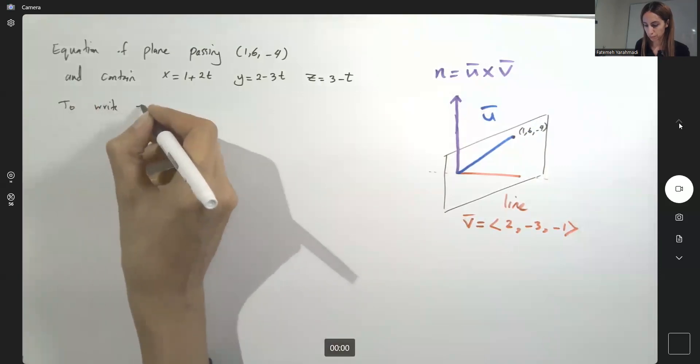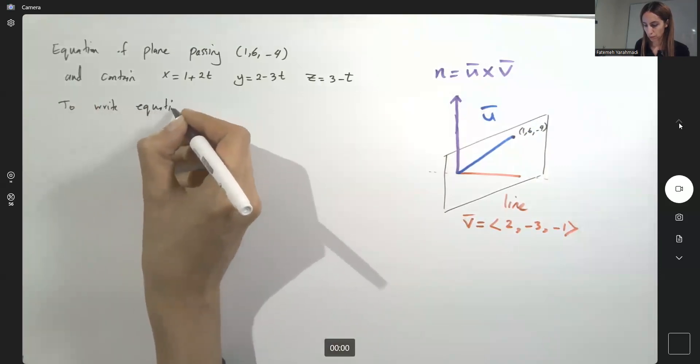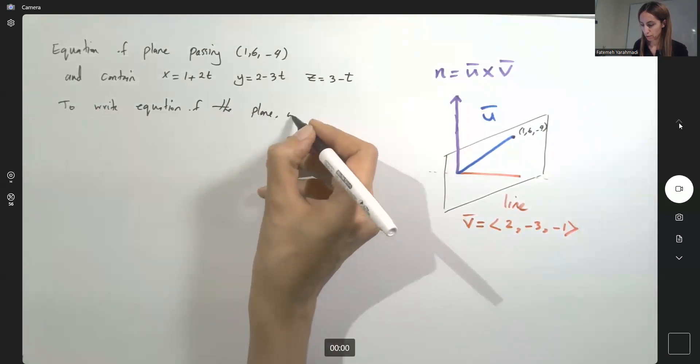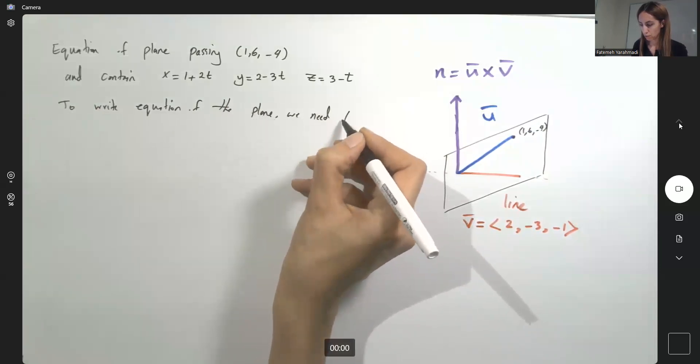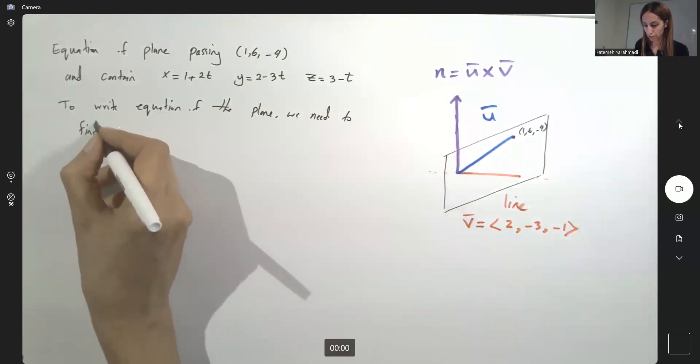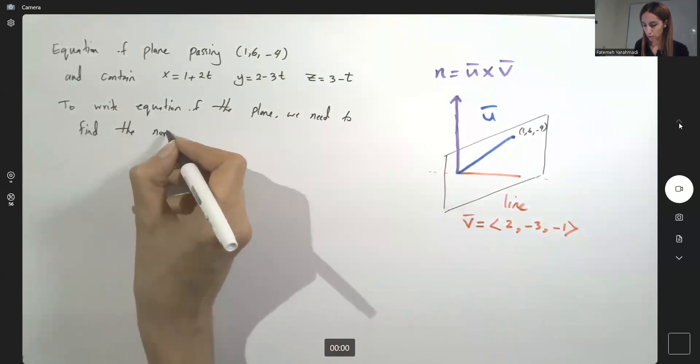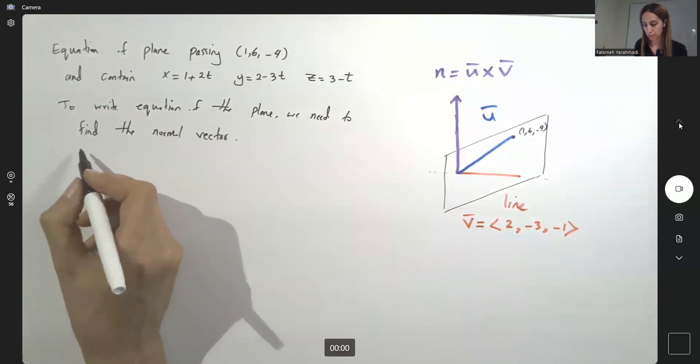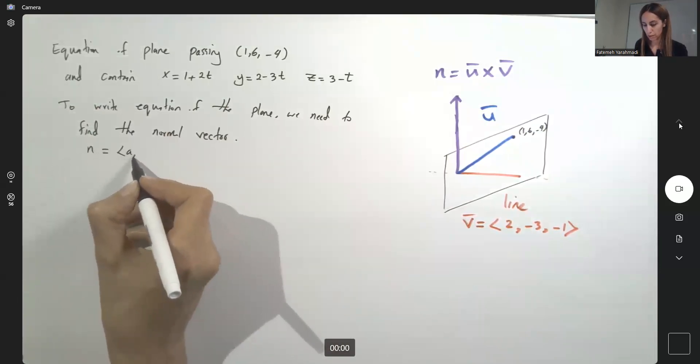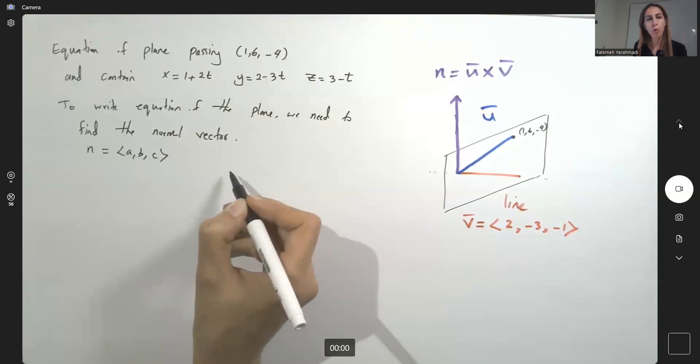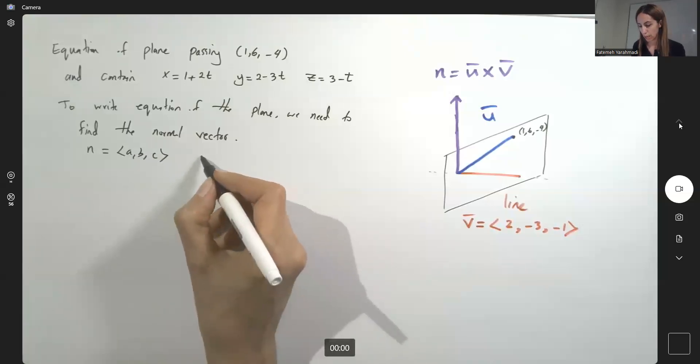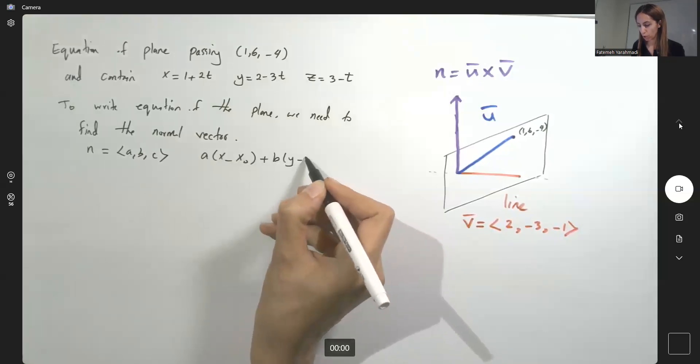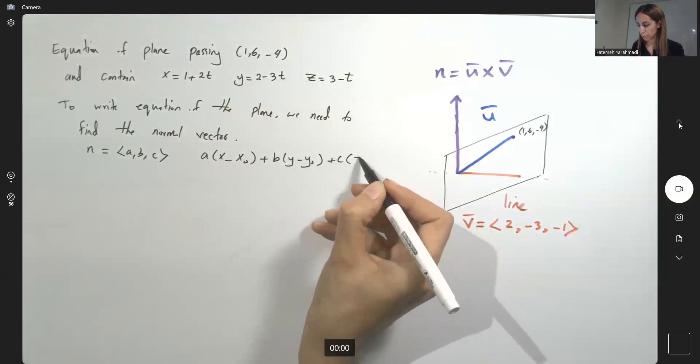Write equation of the plane, we need to find the normal vector. Remember that if you have normal vector n equals a, b, c and one point on this plane, then you have a times x minus x sub 0 plus b times y minus y sub 0 plus c times z minus z sub 0 equal to 0.